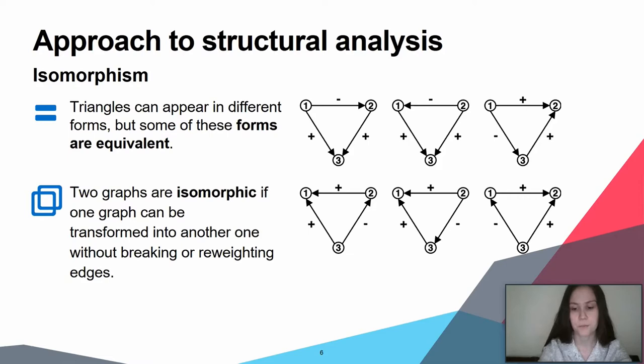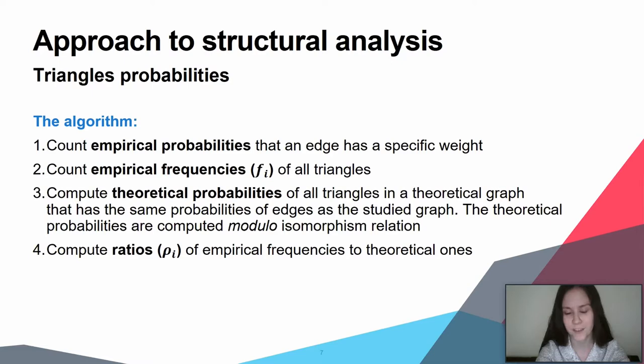As I said before, the algorithm boils down to determine the triangles in a real graph where frequencies deviate more strongly from their frequencies in the baseline. These frequencies of triangles in the baseline graph are called theoretical frequencies, while the observed frequencies of triangles are referred to as empirical frequencies. The ratio of the theoretical frequency of a specific triangle to the total number of all triangles is called the theoretical probability. Similarly, we define empirical probability. These probabilities are computed modulo isomorphism relation we mentioned previously.